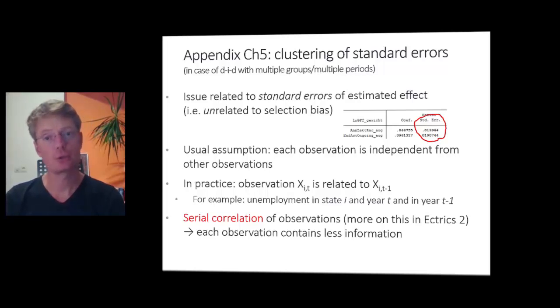unemployment last year is strongly related to unemployment this year. And so if that's the case, if there is serial correlation of your observations, then that means that each observation in your dataset contains less information compared to the situation where each observation is completely independent. So you'll learn more about serial correlation in Ectrics 2 actually.